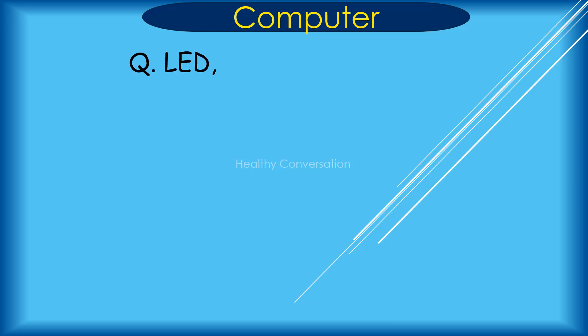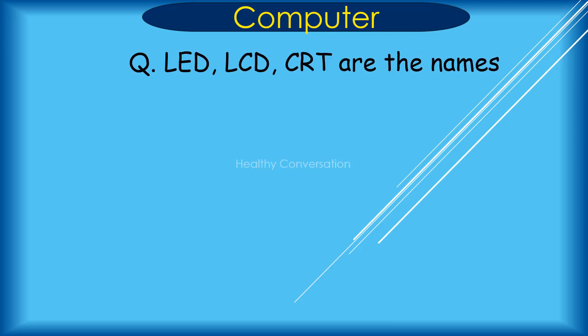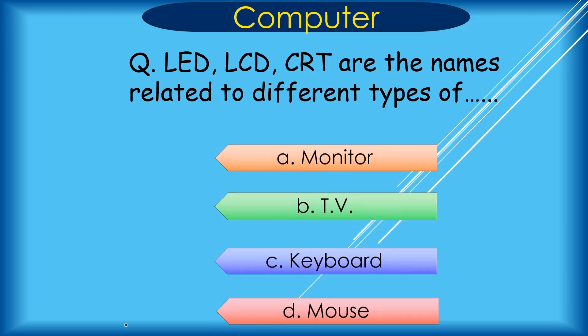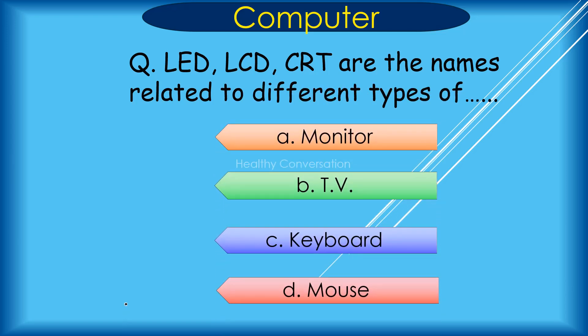Question: LED, LCD, CRT are the names related to different types of dash. A. Monitor, B. TV, C. Keyboard, D. Mouse. Correct answer is A. Monitor.